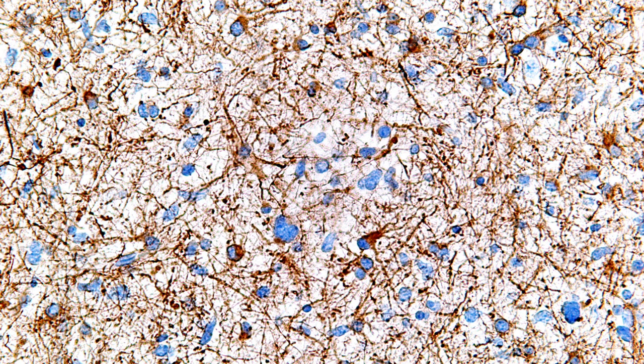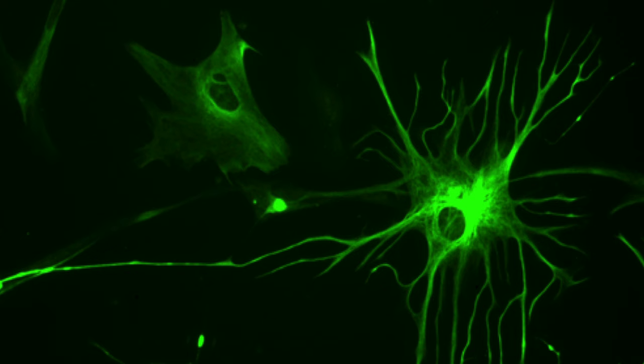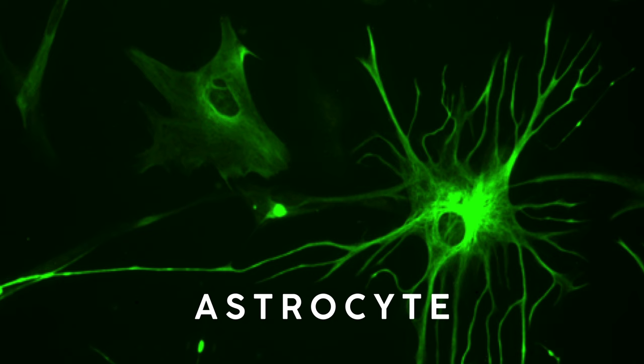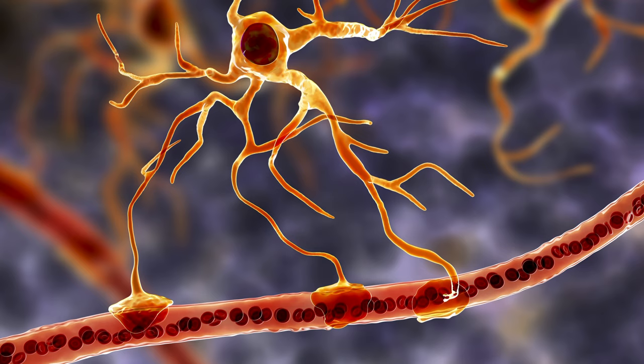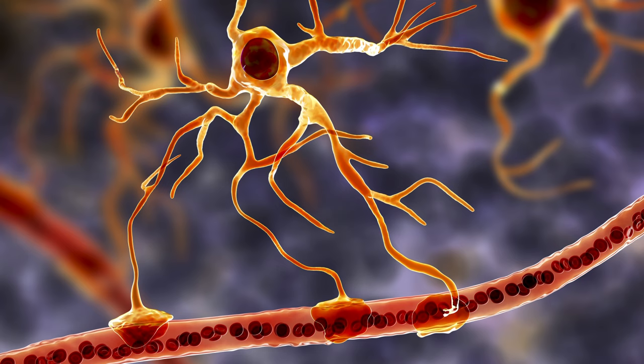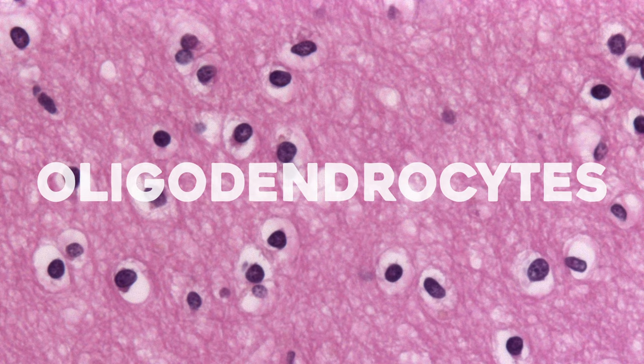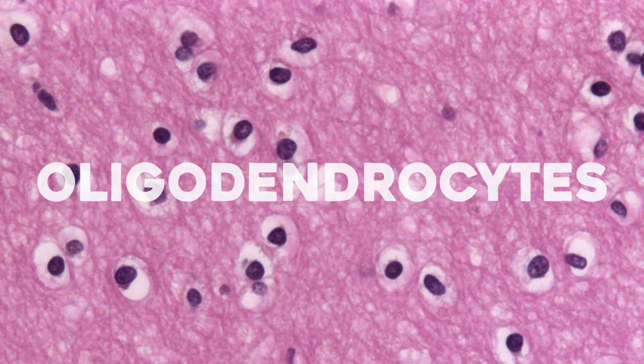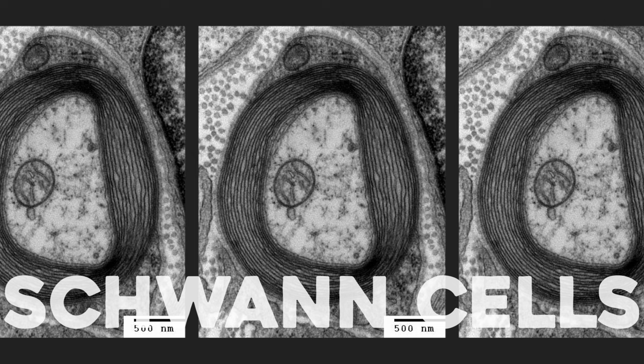But neurons aren't the only type of cell in the nervous system. We also have glial cells — essentially supportive cells. Astrocytes, or star-shaped cells, support and protect our neurons by regulating the blood-brain barrier, helping form synapses, and clearing excess neurotransmitters. They're kind of hard to see with traditional light microscopes, so unless you have an electron microscope, you probably won't get quizzed on them. Oligodendrocytes help make the myelin sheath around neurons in the brain and spinal cord, while Schwann cells make the myelin in the peripheral nerves.